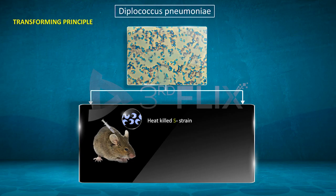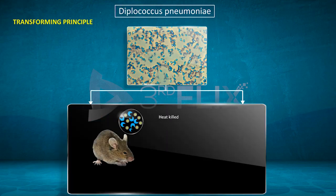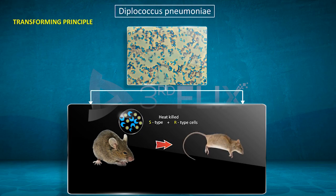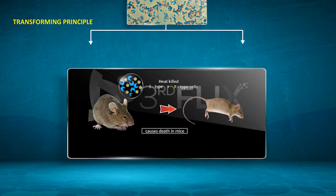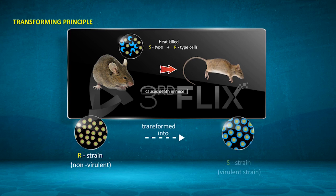On injecting heat-killed S-strain, mice were alive. On injecting a mixture of heat-killed S-strain and fresh R-strain, mice died. This experiment confirmed that R-strain, the non-virulent strain, was transformed into S-strain, the virulent strain, due to the heat-killed strain.